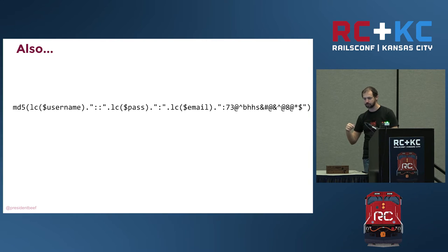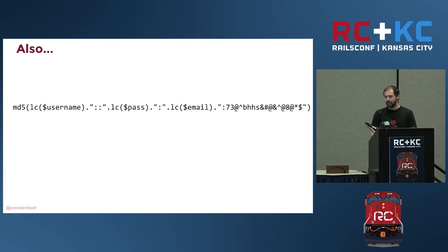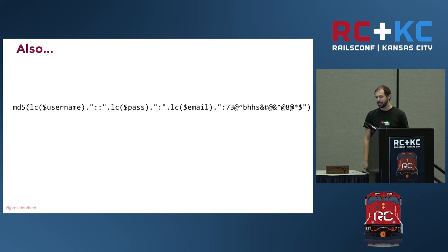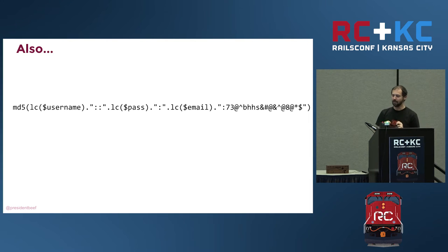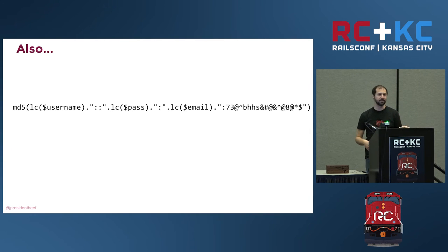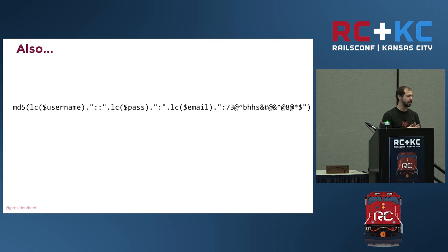There was another piece of code — where LC means lowercase — also calculating a login key. In this case they had username, password, email, and a secret key. But remember, we have all their database and all their source code, so the key is not secret, the username is not secret, the email is not secret — the only thing that's secret is the password. So this was another avenue they could use to try to crack these hashes.